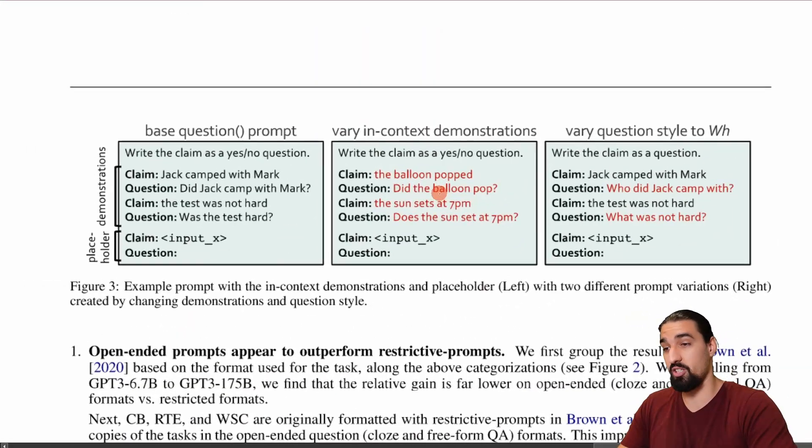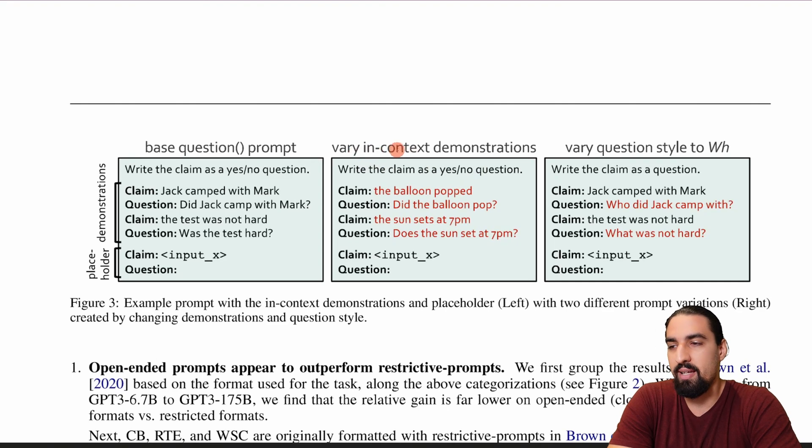So here are some of the variations they do. So for example, you can vary the in context demonstrations. Here's an example. So instead of having this claim Jack camped with Mark did Jack camp with Mark, whatever, they just kind of put in different claims and questions. And the idea of this one in particular is to learn how to given a claim formulate a question. And you can see you can just vary that or you can also just vary how do you form the question.